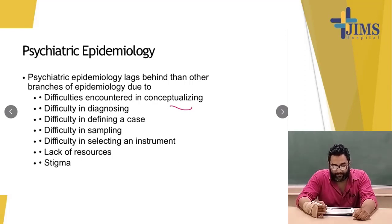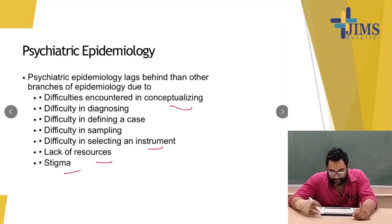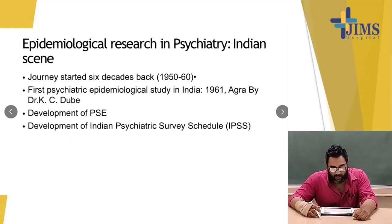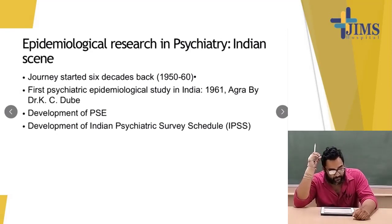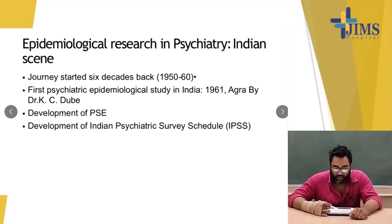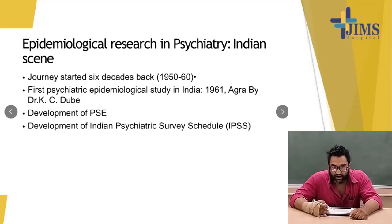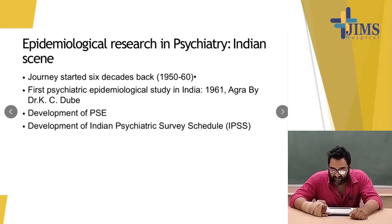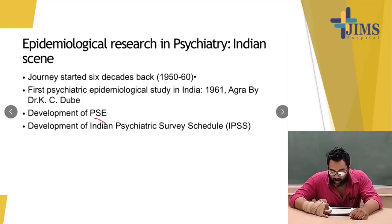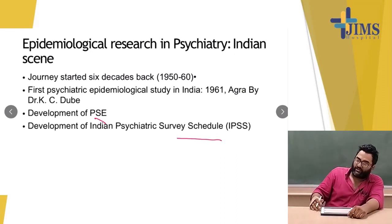Other challenges include difficulty in sampling, difficulty in selecting an instrument, lack of resources, and social stigma. Epidemiology research in India was done by the Indian Psychiatric Association. A study started six decades ago, in the year 1950 to 1960. The first psychiatric epidemiology study was done in 1961 in Agra by Dr. C.K. Dube, and the India Psychiatric Survey Schedule (IPSS) was developed.